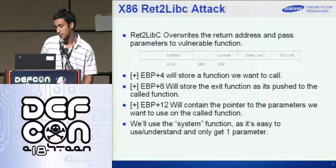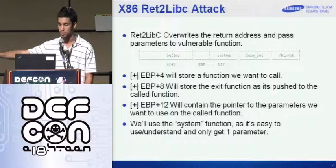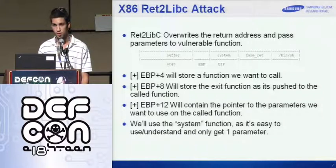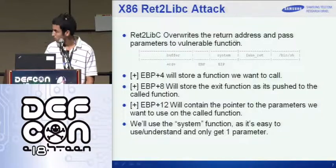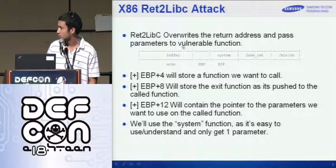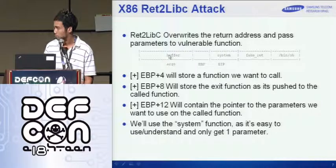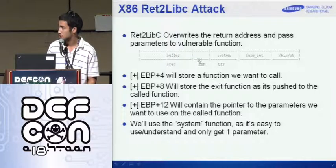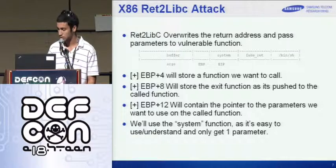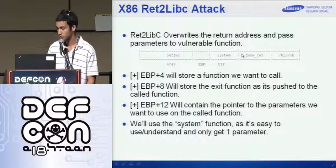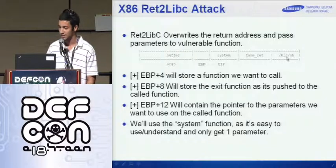Let's cover the x86 ret-to-libc attack from scratch. If you want to exploit a stack overflow on x86 architecture, it's very easy. You put the buffer here, override the EBP — it doesn't really matter — because it's good for frame faking and more advanced attacks, but in this case it's not needed. You just override the EIP with the system function address. You can also put a return address and push parameters on the stack, so you put your parameter in the payload. It's very easy.